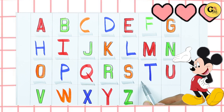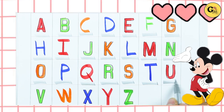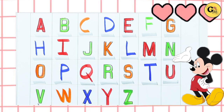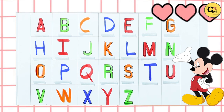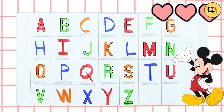S. S for sheep. T. T for tiger. U. U for umbrella. V. V for van. W. W for poach. X. X for xylophone.